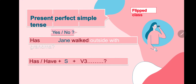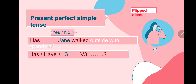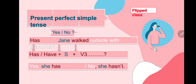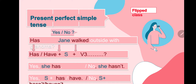Yes or no questions: Has Jane walked with her grandma? We start with have or has, then subject, then verb 3. Answer: Yes, she has. No, she hasn't. Or: No, they haven't. Structure: Has/Have + subject + verb 3?